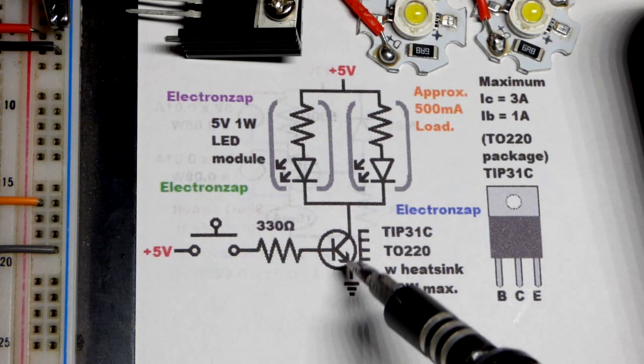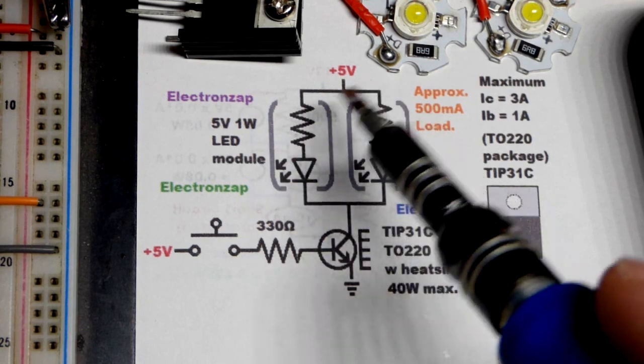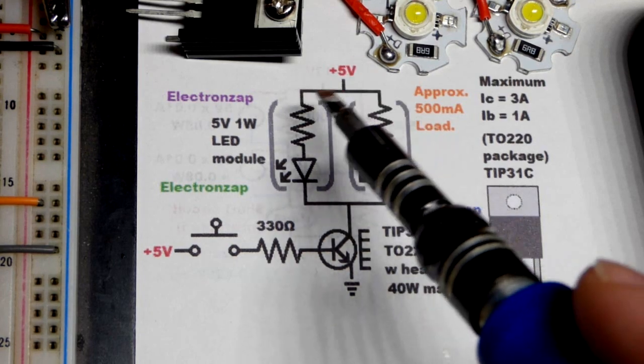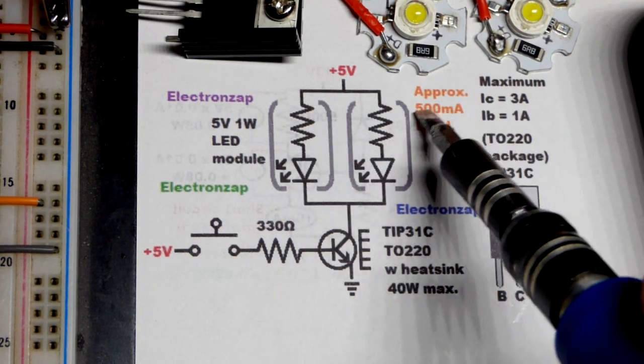But when we just have one of these LED modules, I was getting about 450, I'm sorry, 250 milliamps of current flowing through.